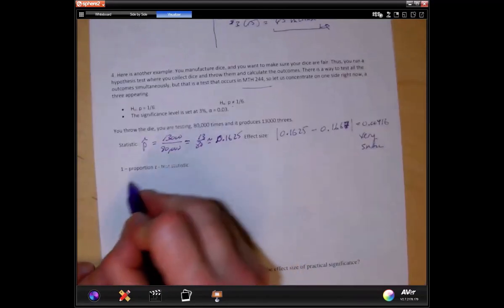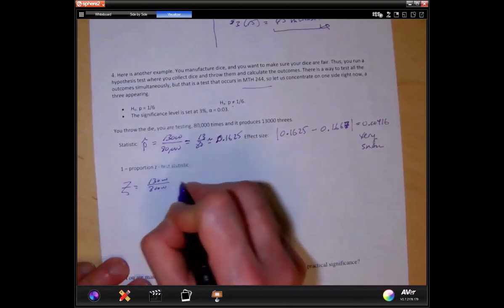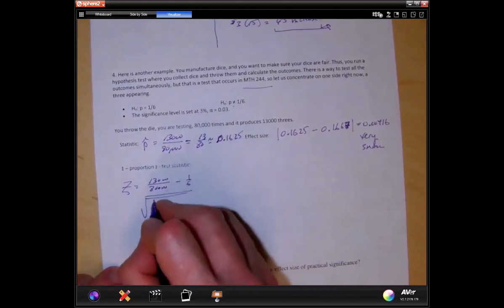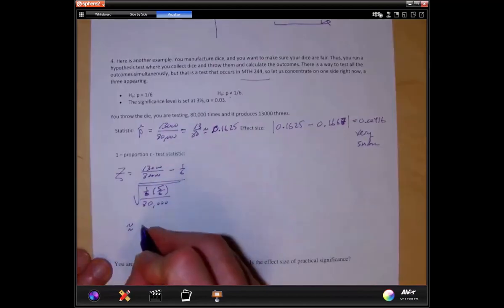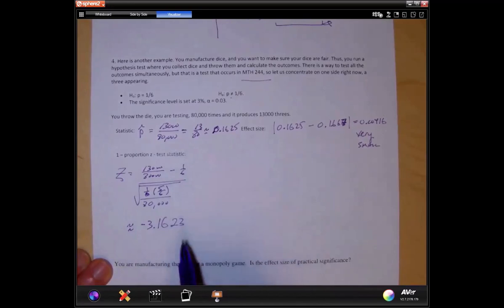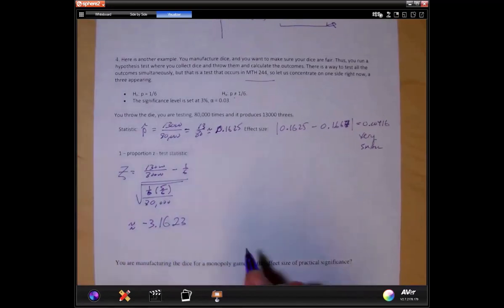I'll do one proportion z-statistic. And I get 3.1623. And I'm going to enter this into GeoGebra.